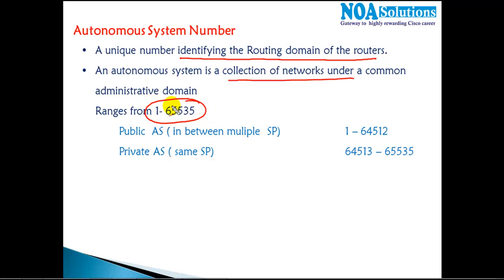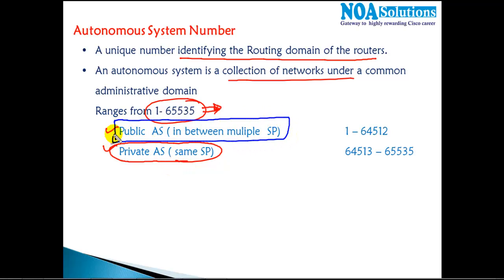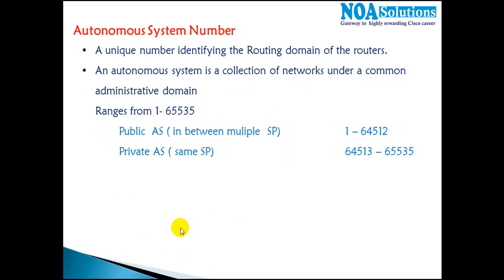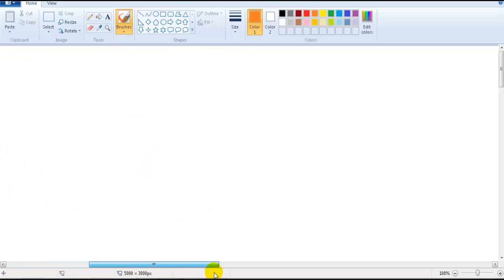The default range of the AS number goes from 1 to 65535. It is further classified into two categories: private AS number and public AS number. The private AS number can be used within the same service provider, and the public AS number can be used between multiple service providers.